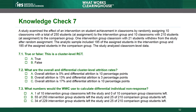A study examined the effect of an intervention on student achievement in classrooms by randomly assigning 10 classrooms with a total of 250 students to the intervention group and 10 classrooms with 210 students to the comparison group. One intervention group classroom with 21 students withdrew after random assignment. The analytic sample consisted of 195 intervention group students and 185 comparison group students, for a total of 380 students. The study analyzed classroom-level data. True or false: this study is a cluster RCT.